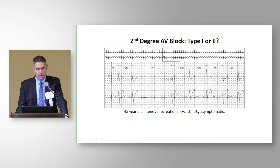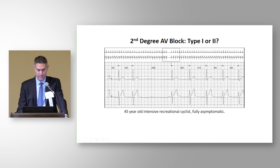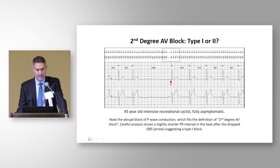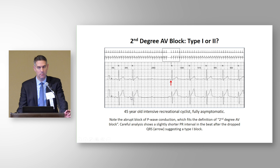Is this second-degree AV block Type 1 (Wenckebach, normal) or Type 2 (abnormal)? This is a 45-year-old intensive recreational cyclist, fully asymptomatic. Careful analysis shows a slightly shorter PR interval in the beat after the dropped QRS. Following the pattern: the PR interval lengthens slightly, there's a dropped QRS complex, and then in the next beat the PR interval is shorter than the last conducted P wave — making this Type 1 Wenckebach block, which is physiologic.